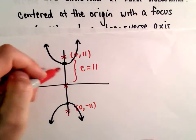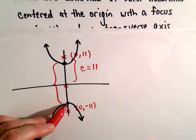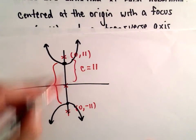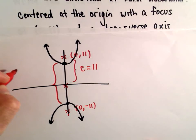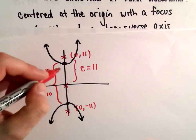So we know if we go from one vertex to the other vertex, that's our transverse axis. If we think about the length of that transverse axis, we know that the entire length is 20, which means we must be going 10 units up and 10 units down.